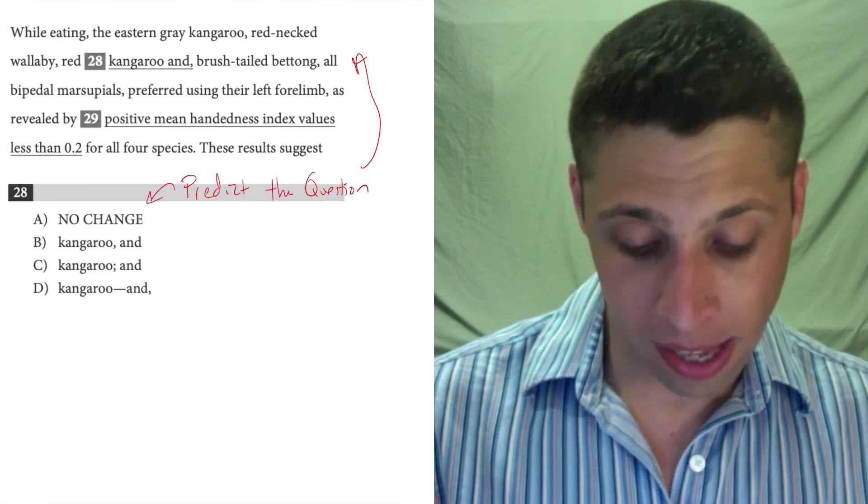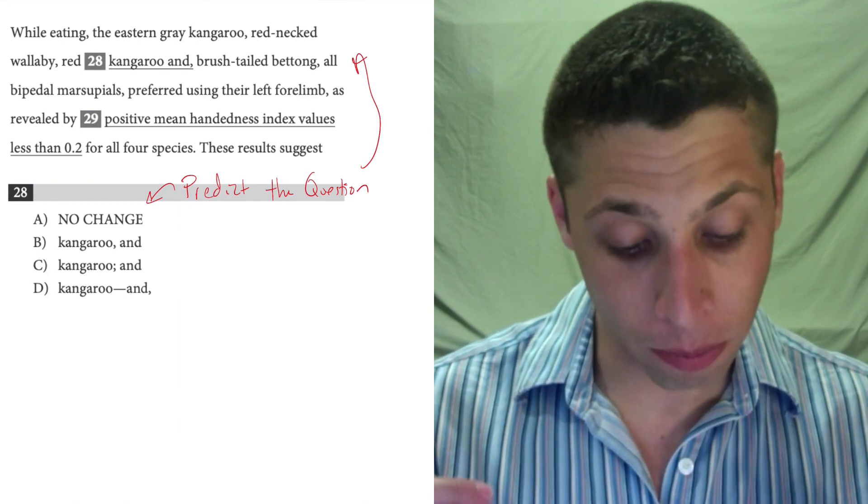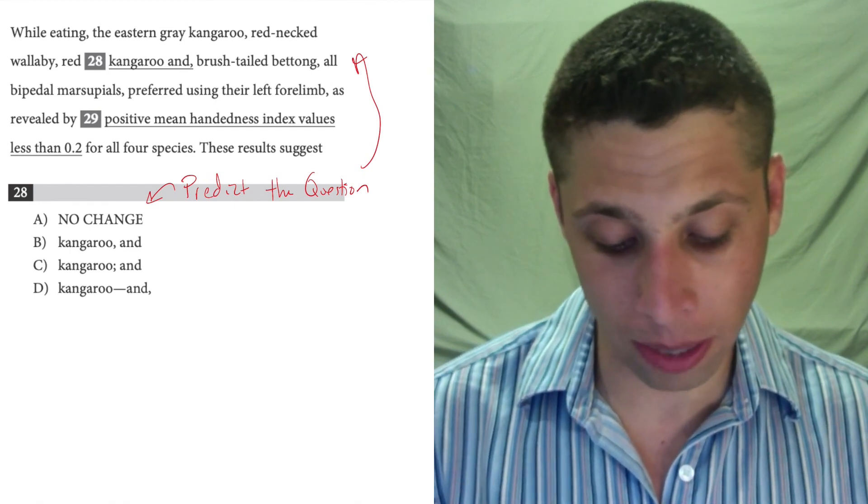While eating, the eastern gray kangaroo, red-necked wallaby, red kangaroo, and brush-tailed bettong, all bipedal marsupials preferred using their left forelimb, blah, blah, blah.